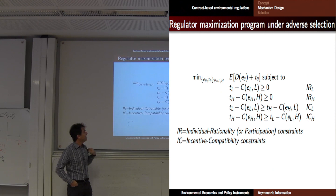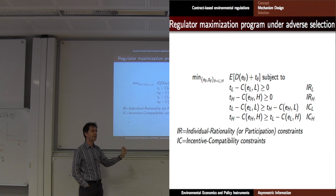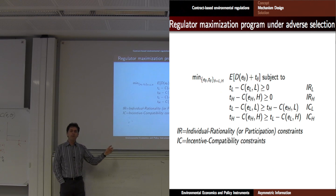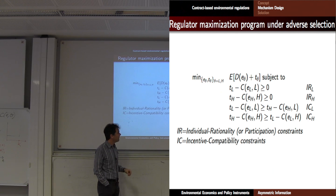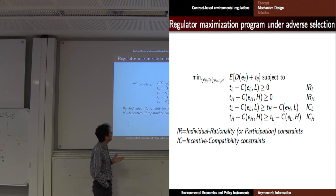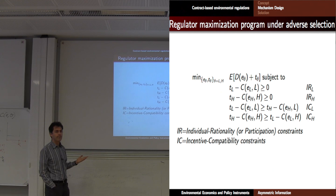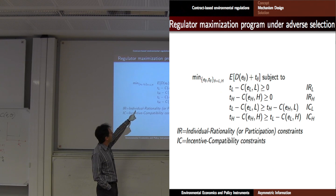The mechanism is defined by some emission and transfer depending on type — contingent on type. The idea is to have an emission and subsidy for each type and make sure that each type selects the one which is assigned to itself. The schemes must be such that both types of firms agree to participate. These are what are called the participation constraints or individual rationality constraints.